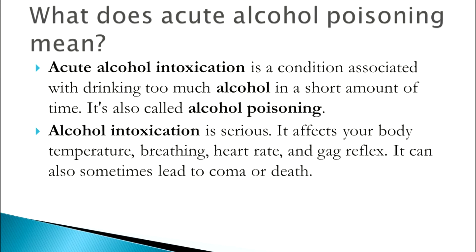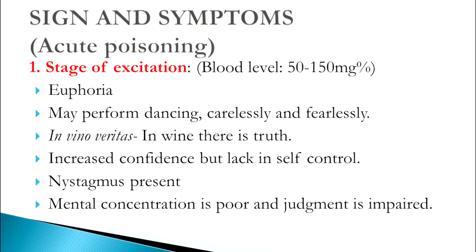Acute alcohol intoxication is a condition associated with drinking too much alcohol in a short amount of time, also called alcohol poisoning. It is a serious problem that affects body temperature — causing hypothermia — decreases breathing rate and heart rate, and can trigger gag reflex. In worst-case scenarios, it can lead to coma or death. There are three main stages of acute poisoning: stage of excitation, stage of incoordination, and stage of coma.